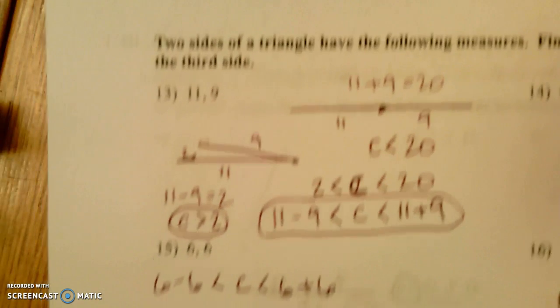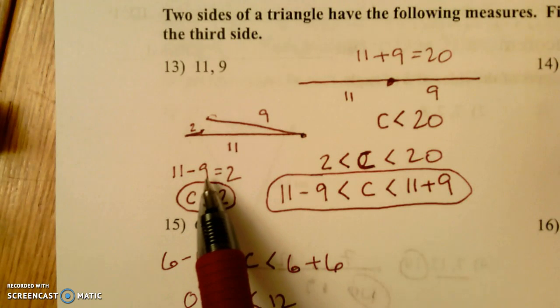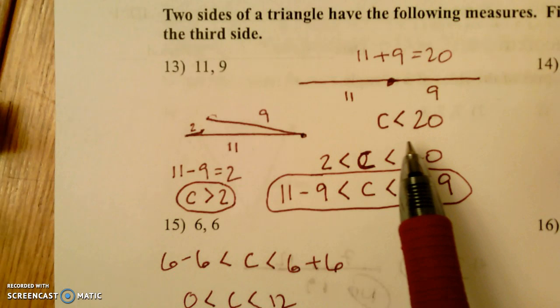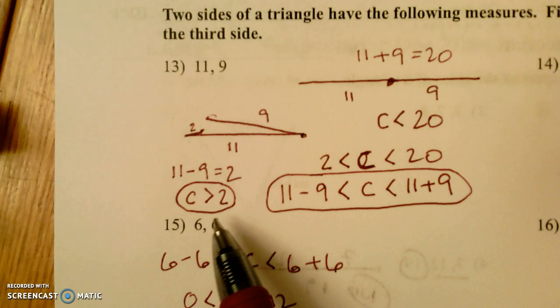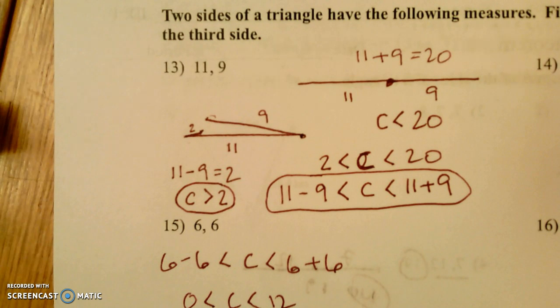So just remember, if you have to find the range of the third side, it's either going to be larger than the difference of the first two sides and smaller than the sum of the two sides. But it can't be exactly the sum or exactly the difference. It has to be something bigger than the difference, smaller than the sum. All right. Good luck.